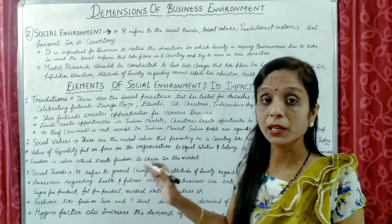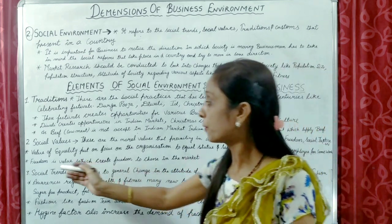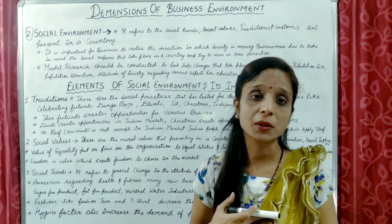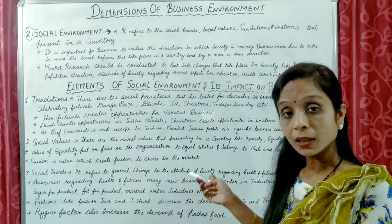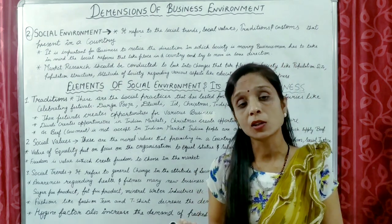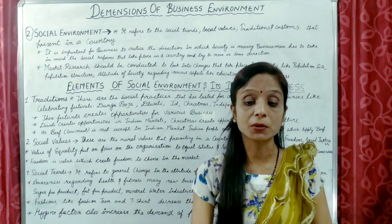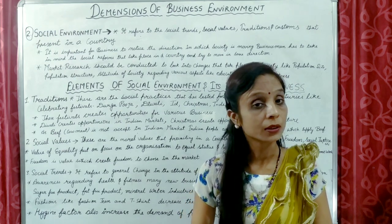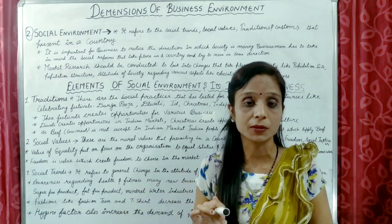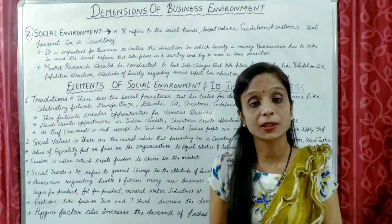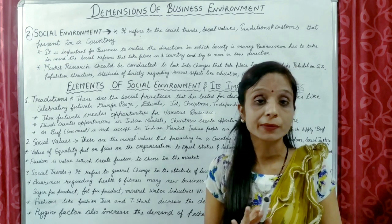So we must consider what moral values exist in a country. Like freedom — freedom is also a moral value. We want freedom; we want to remain free and not be enslaved. Freedom is a value which creates the freedom to choose in the market. Because of this moral value, we have the right to choose in the market. A producer cannot compel us to buy their product. If a shopkeeper shows us two products, they cannot force us to buy product B — it is our choice.